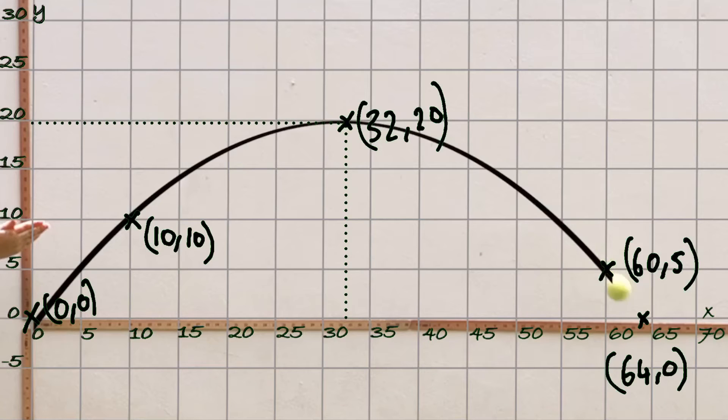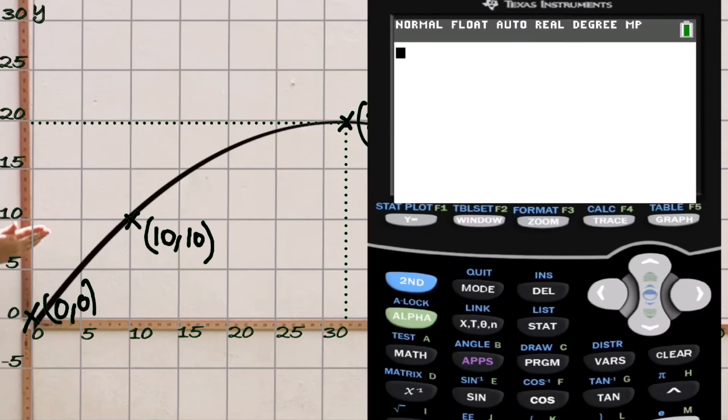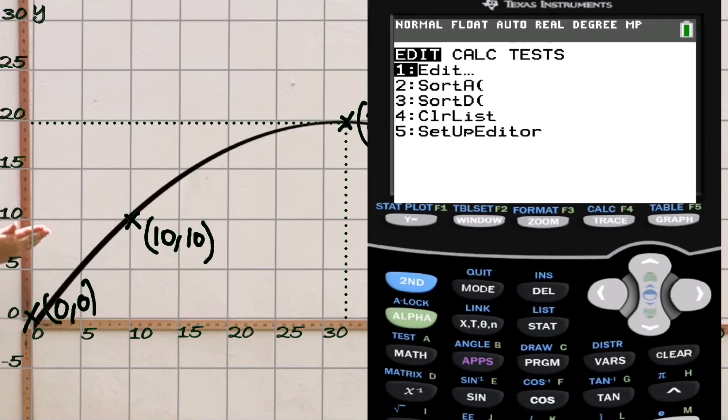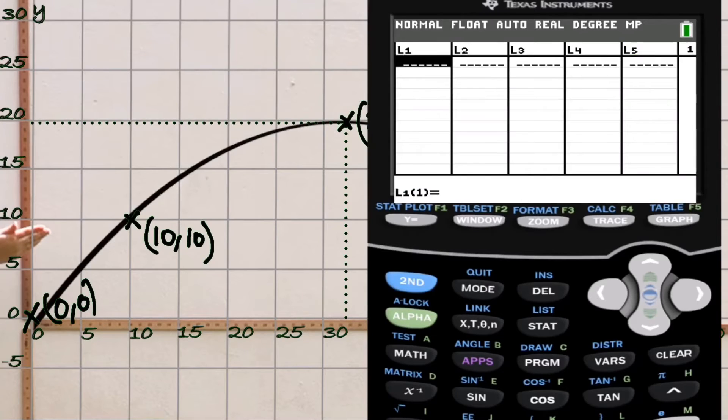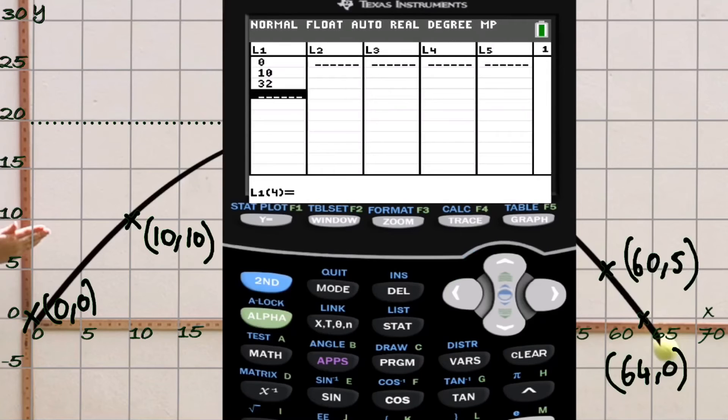Now what we'll do with these points is find the quadratic regression. On the GDC, we want to go to the stat mode, so press STAT and then edit. In list one I'm going to do all the x values. We started with (0, 0) which was the origin, so let's enter 0. Then we had the point (10, 10), so we'll put in 10. We had a third point which was (32, 20), so we'll do 32. Then we had 60 and 5, so we'll do 60. Finally we had 64, and that was when it crossed the x-axis.